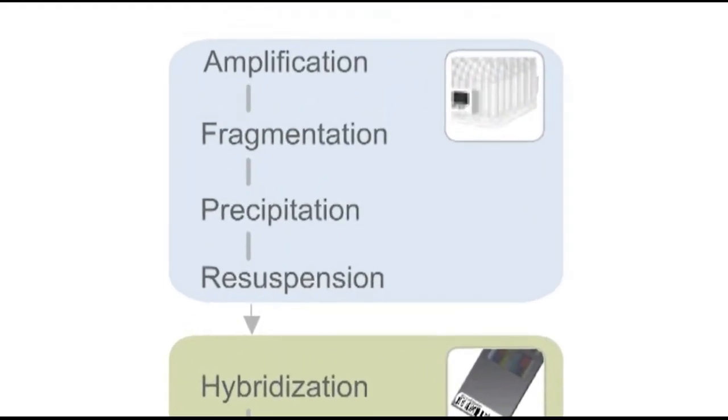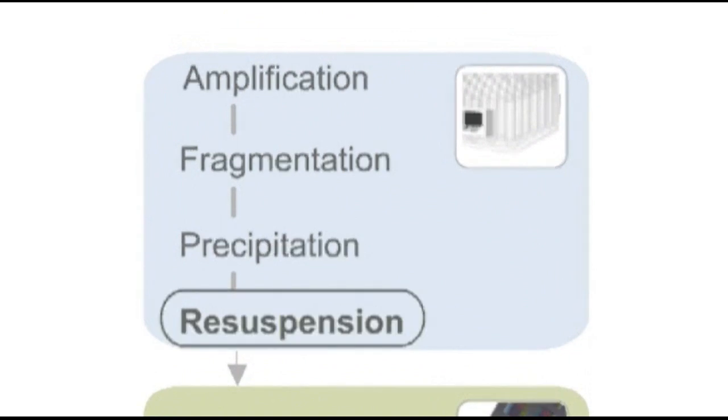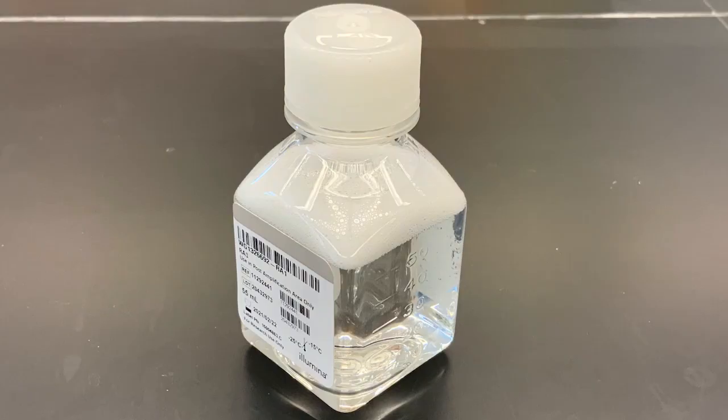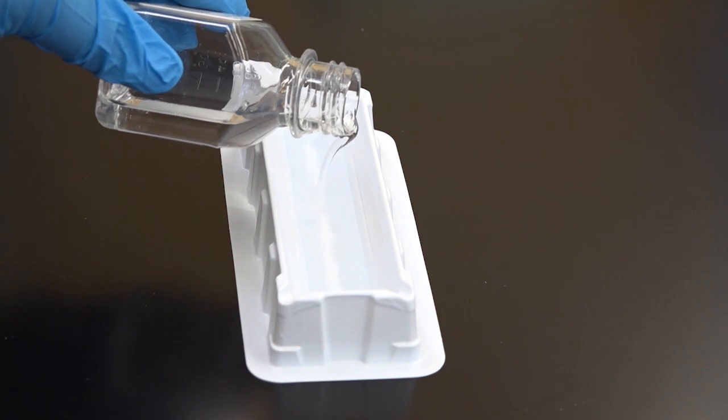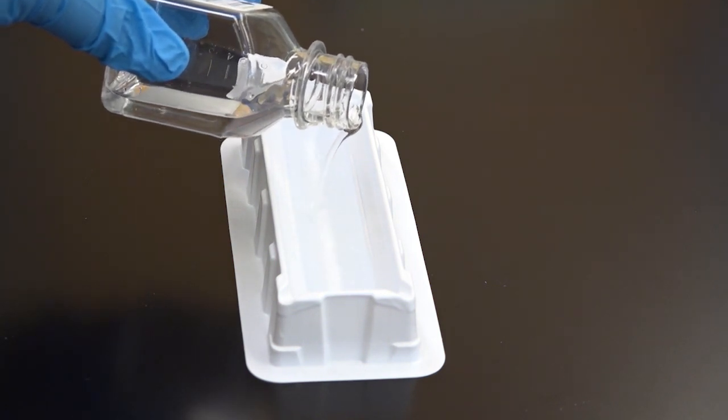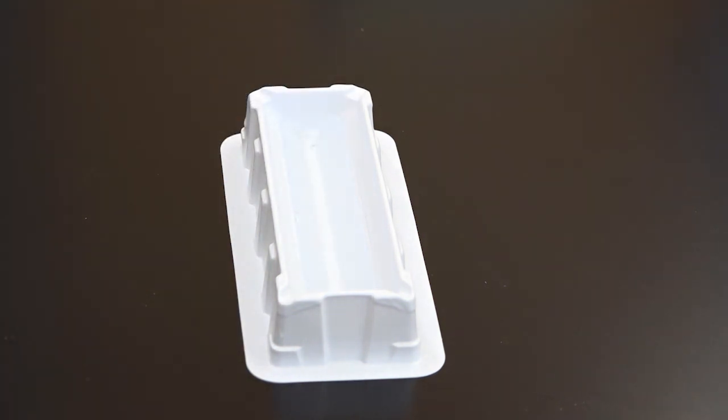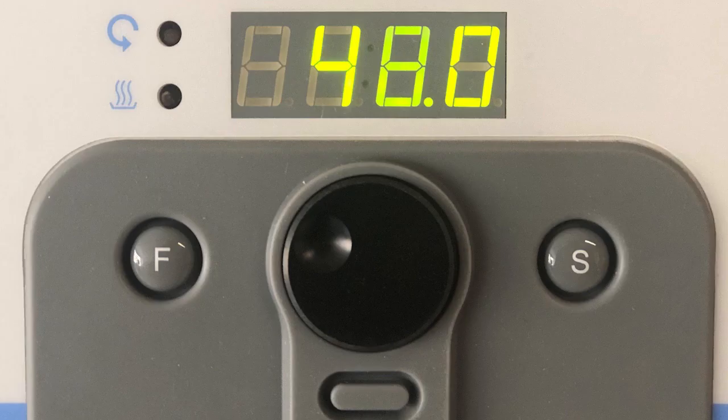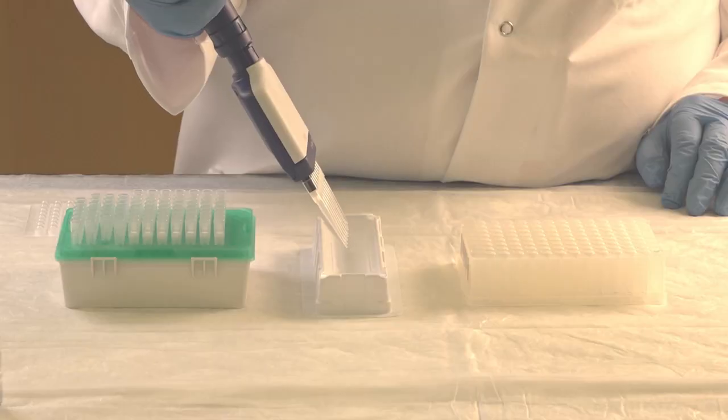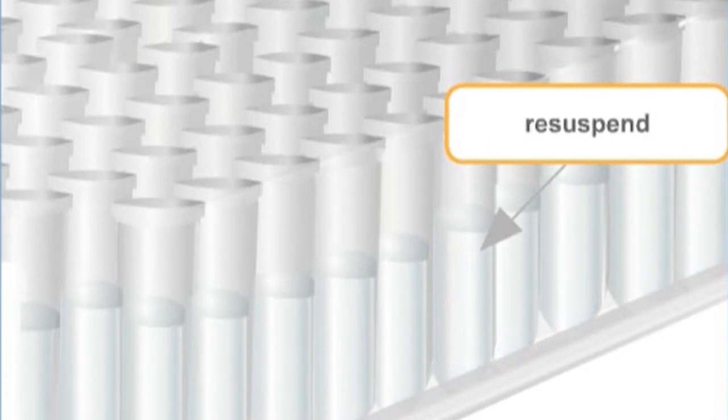The next step in the Infinium assay is resuspension. It is important to dispense fresh resuspension reagent each time for the resuspension step. Pour the resuspension reagent into a disposable trough. Set the hybridization oven to 48 degrees Celsius. After the pellet has been allowed to dry, it is resuspended in hybridization buffer. This buffer provides ideal conditions for the next step, hybridization to the bead chip.